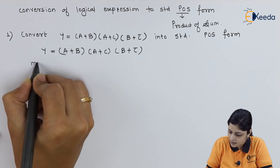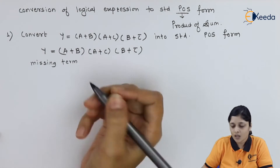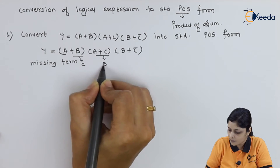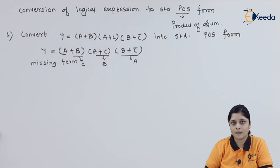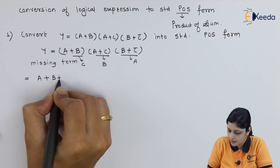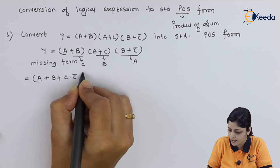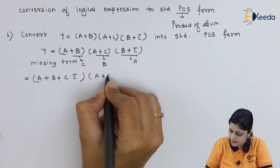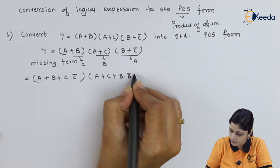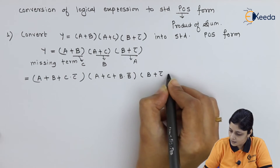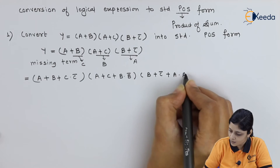You have to find out the missing terms. Here the missing term in the first bracket is c, in the second bracket is b, and in the third bracket is a. The logic behind this is: add (c · c̄) to (a plus b), add (b · b̄) to (a plus c), and add (a · ā) to (b plus c̄), because the value of c · c̄, b · b̄, and a · ā is zero.